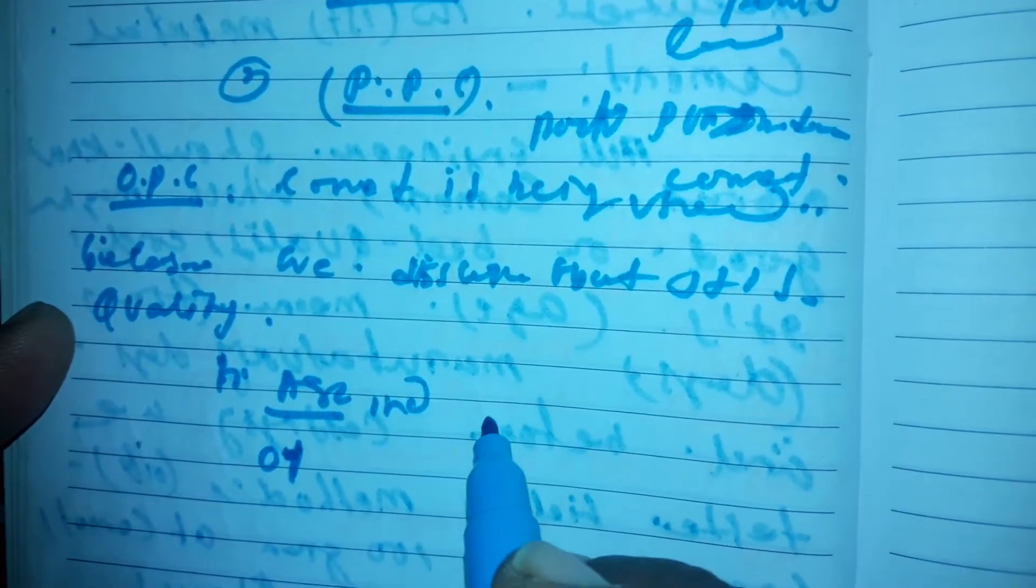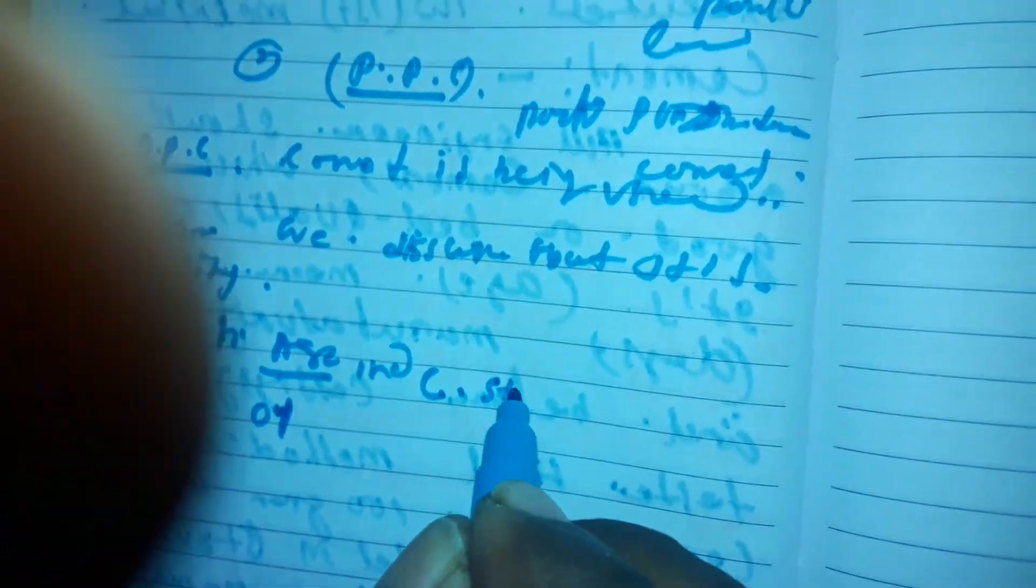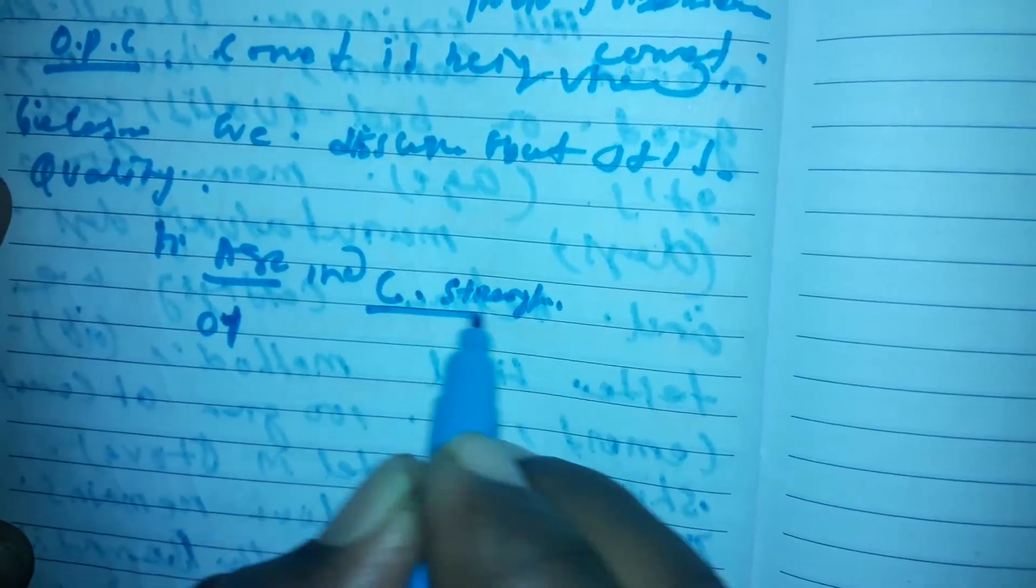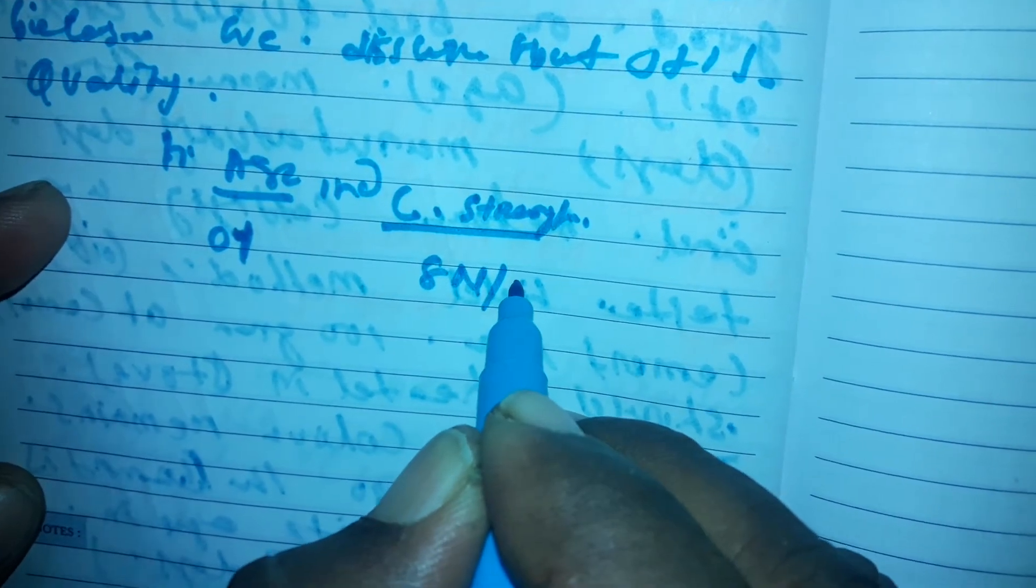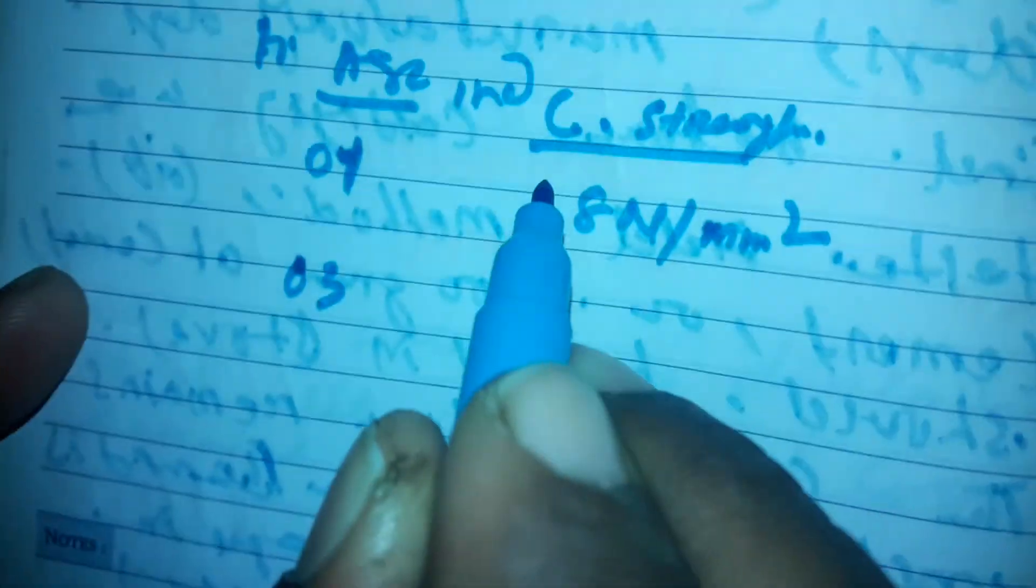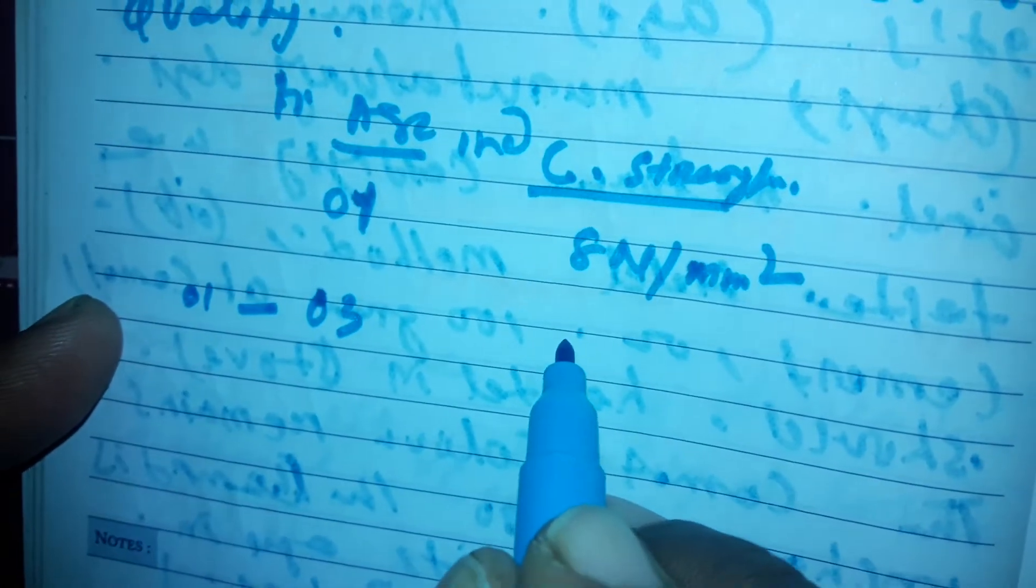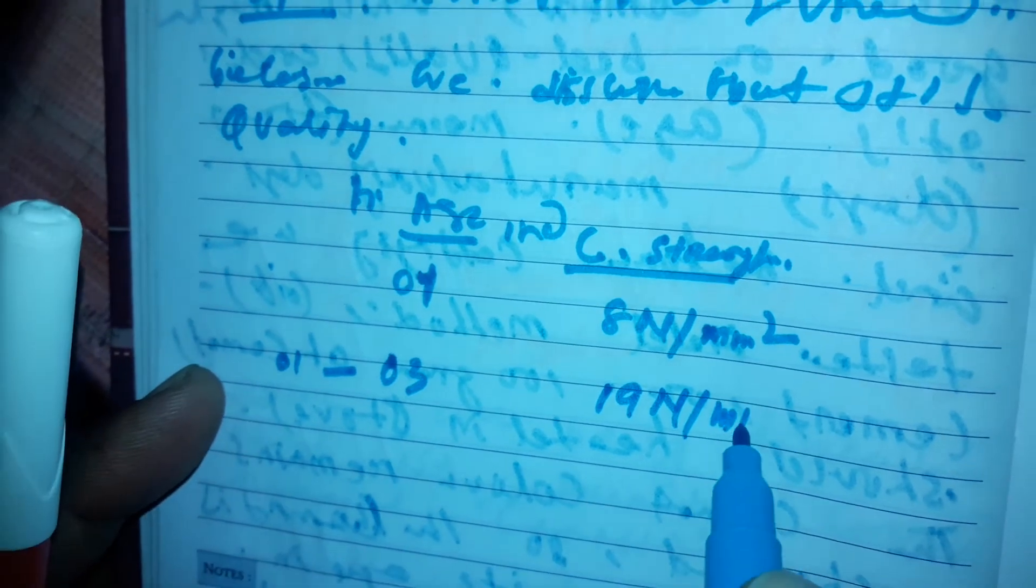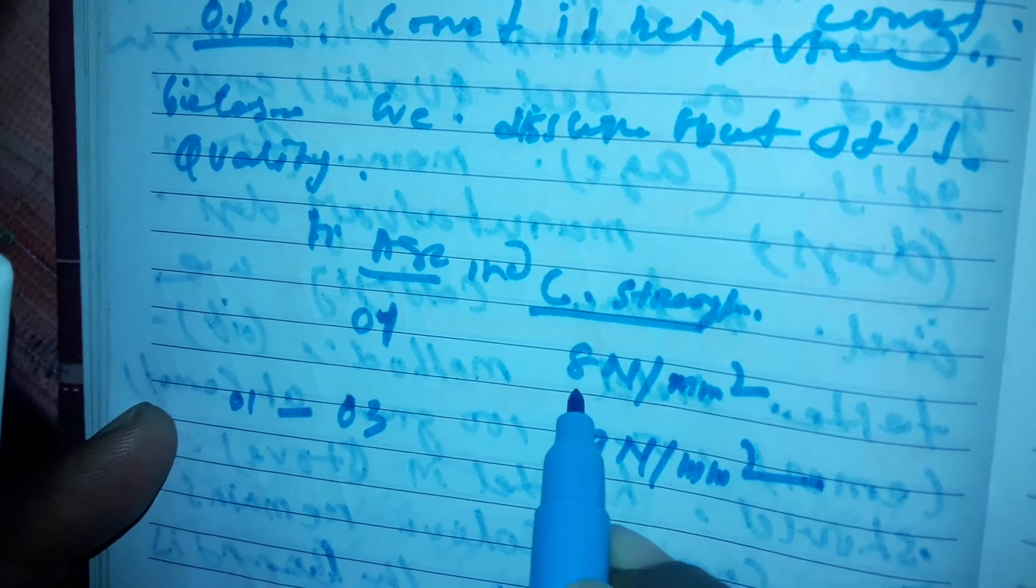Compressive strength - C stands for compressive strength. In one day it's 8 Newton per mm square. From one day to three days, the compressive strength will be 19 Newton per mm square - from 8 to 19, that's 11 Newton increase.